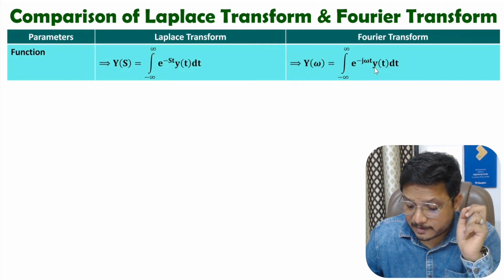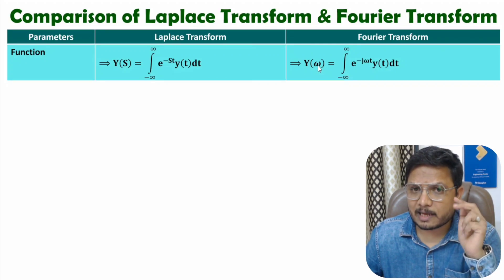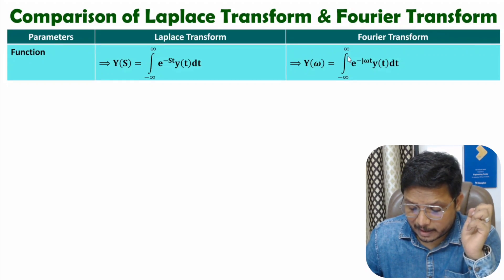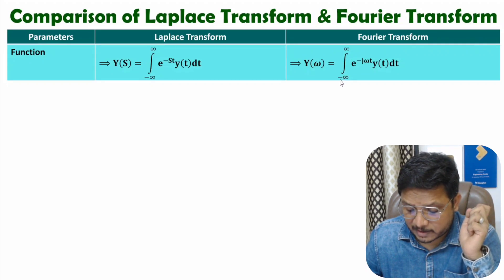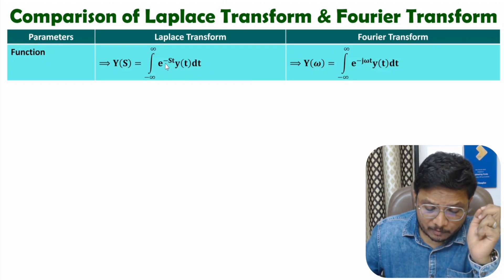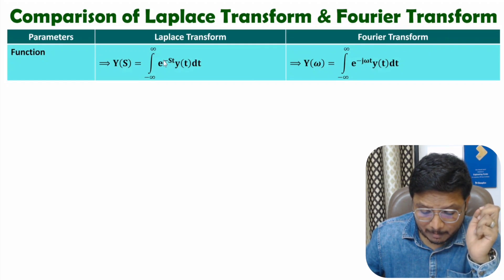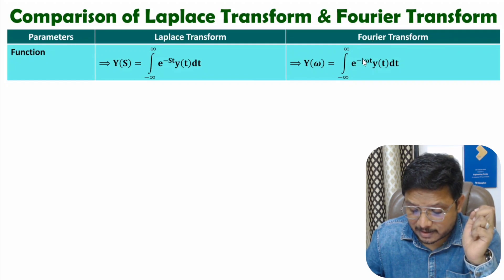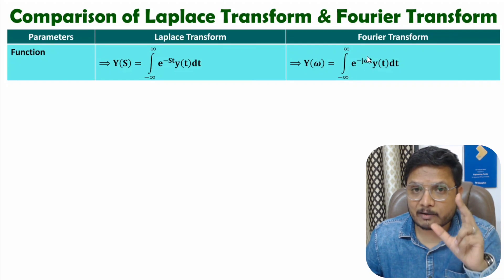If you have time domain signal y(t), then the Fourier transform will be Y(ω) — in some books they may write Y(jω), that is also fine. So the Fourier transform is the integration from minus infinite to plus infinite of e to the power minus jωt, y(t) dt. If you carefully observe, with Laplace transform we have e to the power minus st, while with Fourier transform we have e to the power minus jωt. So s and jω are the key differences between the two.